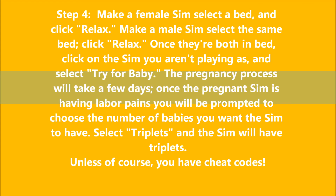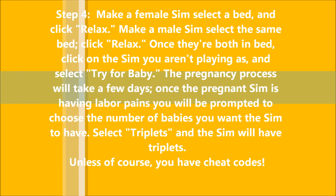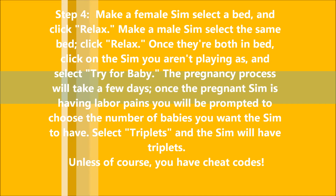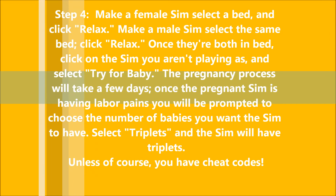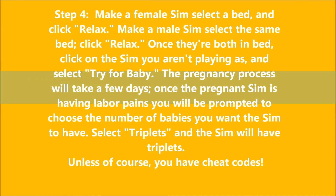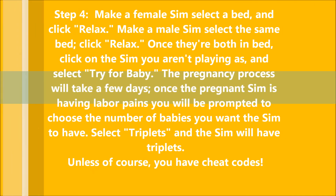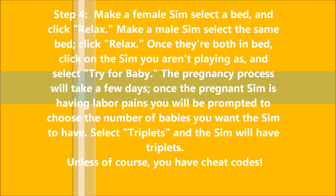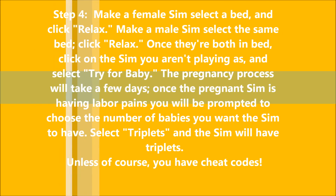The pregnancy process will take a few days. Once the pregnant Sim is having labour pains, you will be prompted to choose the number of babies you want at the Sim tab. Select Triplets and the Sim will have triplets.